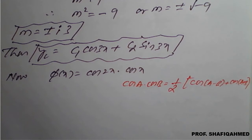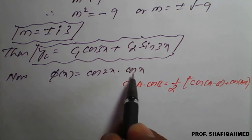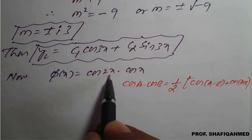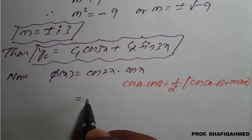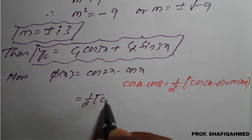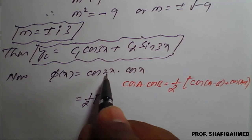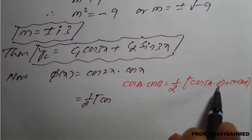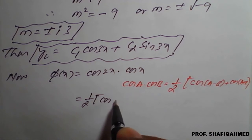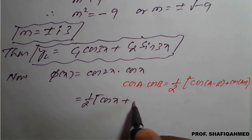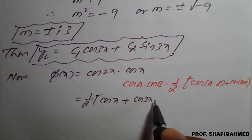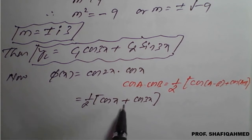Applying the formula to cos(2x)·cos(x) with A = 2x and B = x: cos(2x)·cos(x) = (1/2)[cos(2x − x) + cos(2x + x)] = (1/2)[cos(x) + cos(3x)]. This is our expanded φ(x).